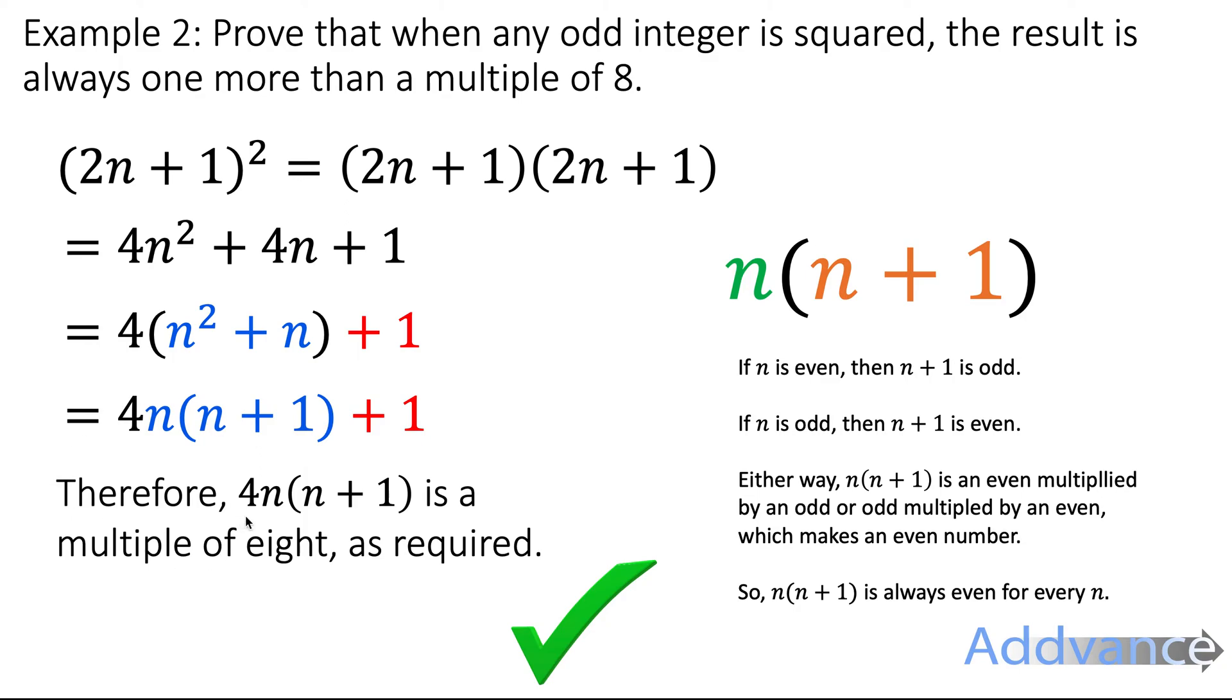So therefore, 4n times n plus 1 is a multiple of 8, because it's 4 times an even. And therefore, this is a multiple of 8 plus 1. One more than the multiple of 8 as required.